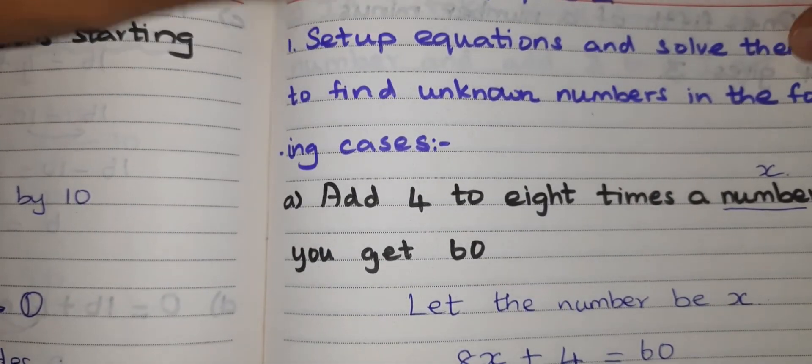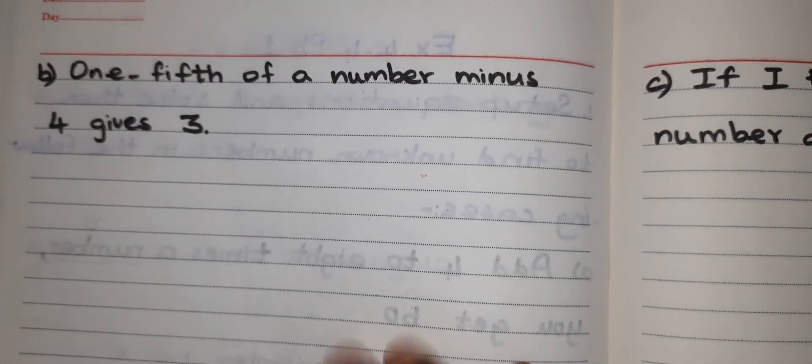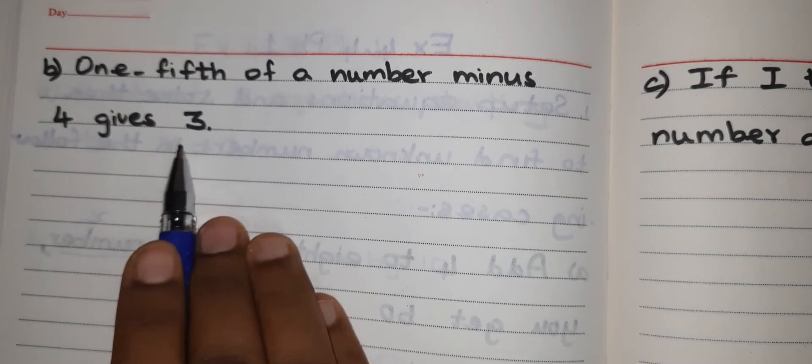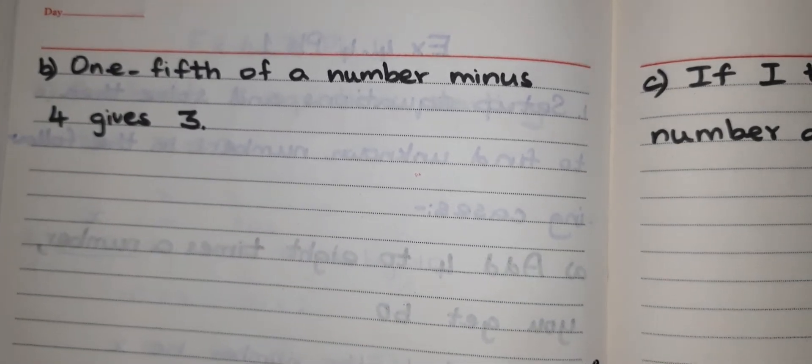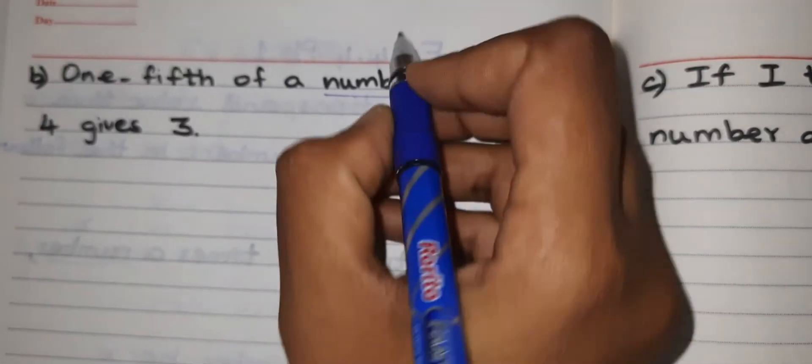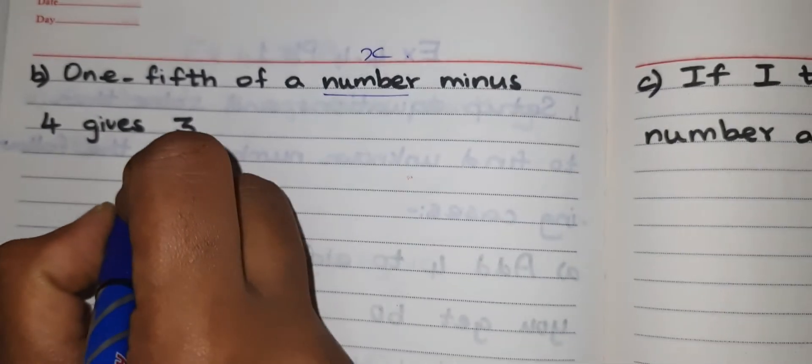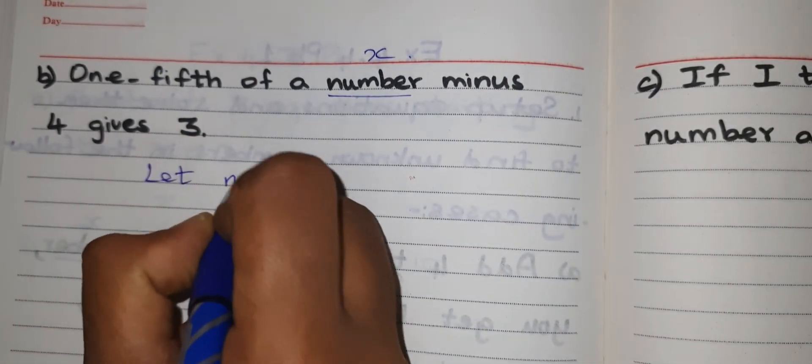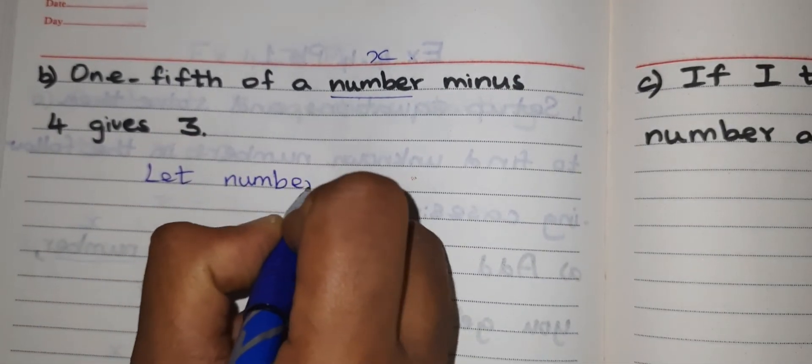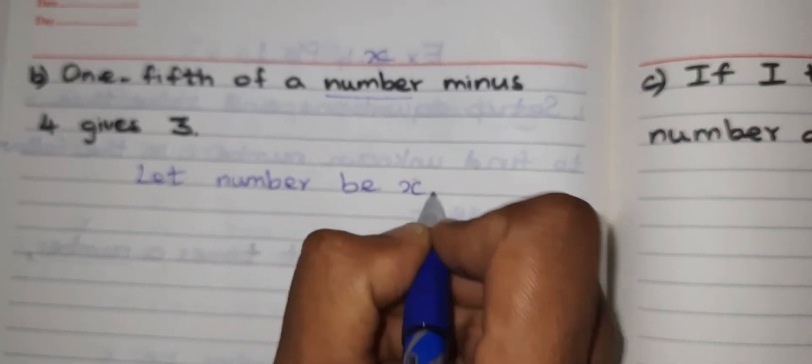Next problem. One-fifth of a number minus 4 gives 3. So here also I have to consider the number as X. Let number be X.